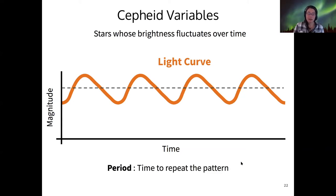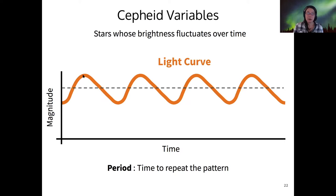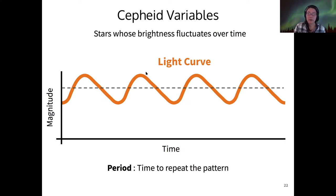The time that it takes for this pattern to repeat — to go from a dip to a dip or a peak to a peak — that's called the period of the light curve. The period has units of time.